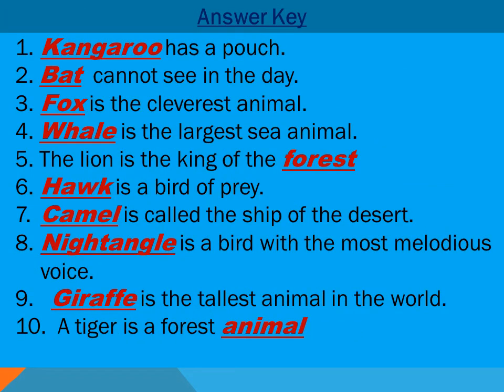Now here are the answers. Number one: a kangaroo has a pouch — if someone asks which animal has a pouch, the answer is surely kangaroo. Number two: the animal that cannot see in the day is the bat. Number three: the cleverest animal is the fox. Number four: the largest sea animal is the whale.